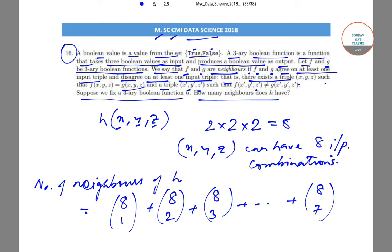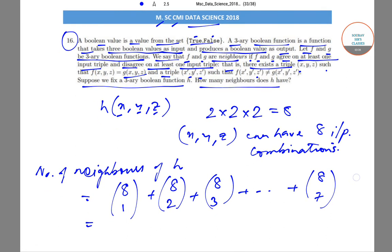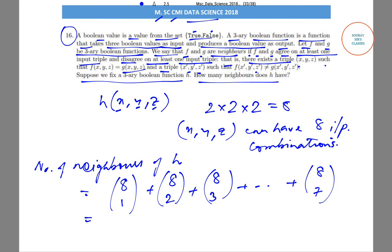Okay, so this is, and we know the formula for this is basically equal to 2^8 - 2, and this sum will give us 254, which is the correct answer.